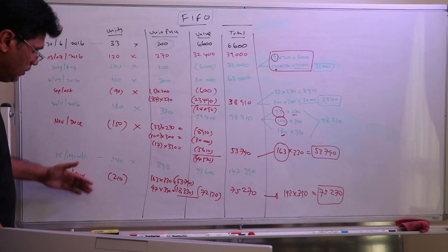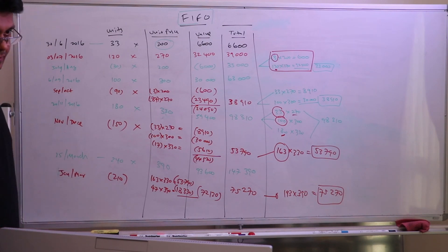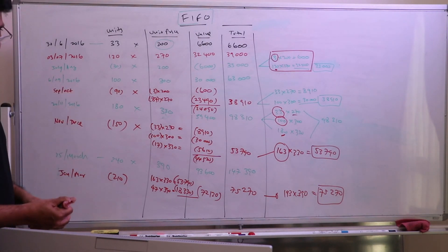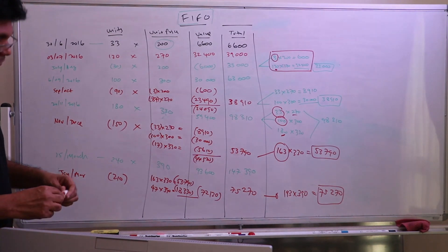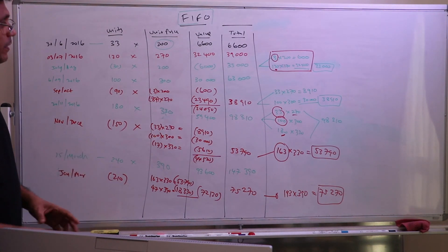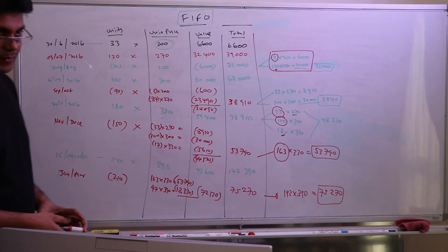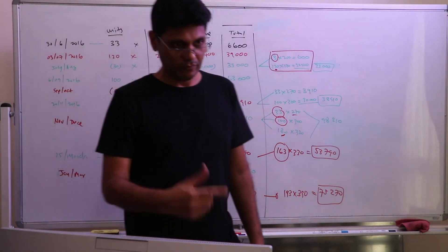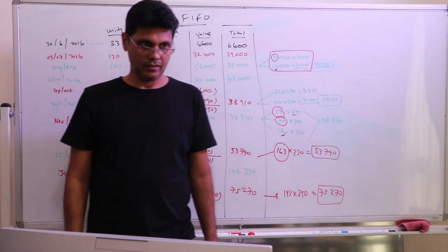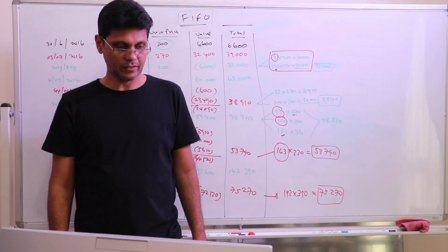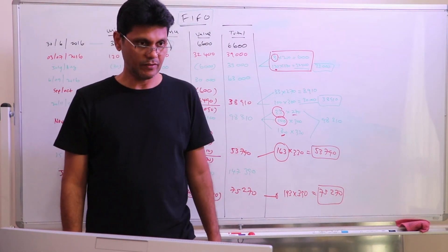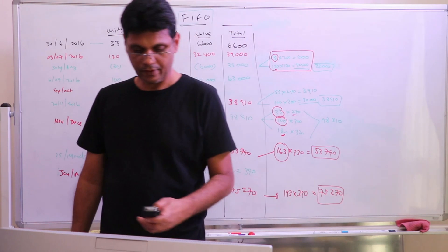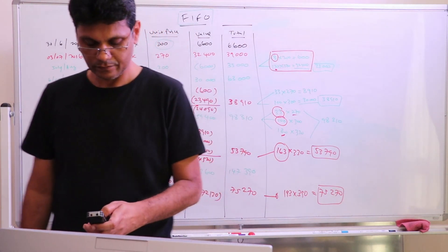So that's the last transaction. This is the FIFO method complete. We will now discuss the LIFO method. Okay, we will discuss that later.